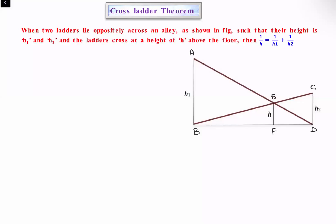Let's see what is the cross-ladder theorem and its proof. The cross-ladder theorem states that if there is an alleyway with two buildings on each side.